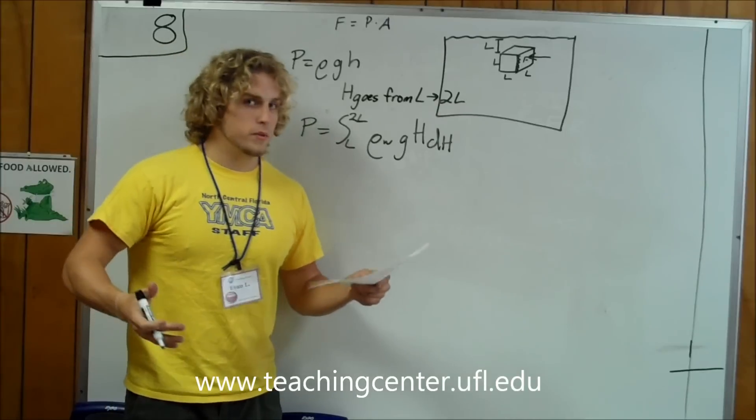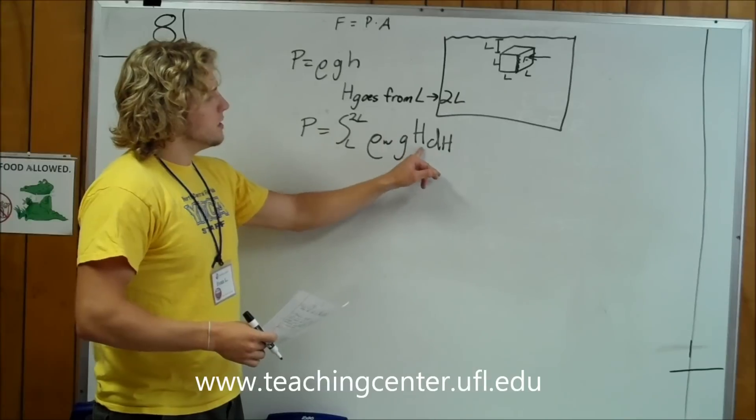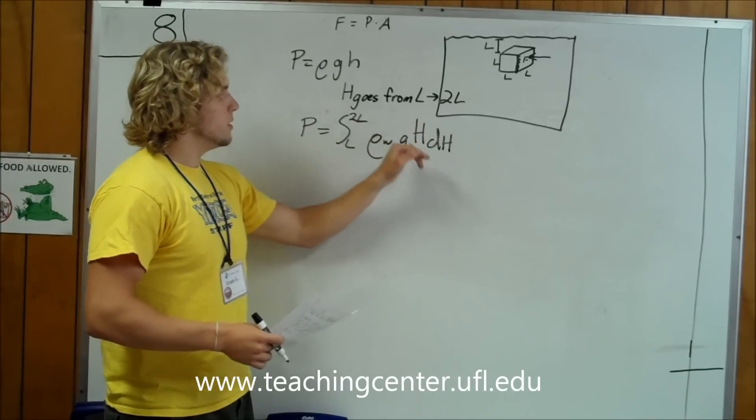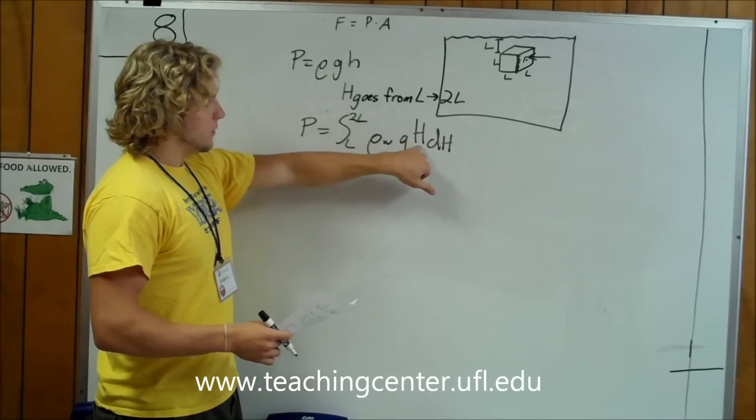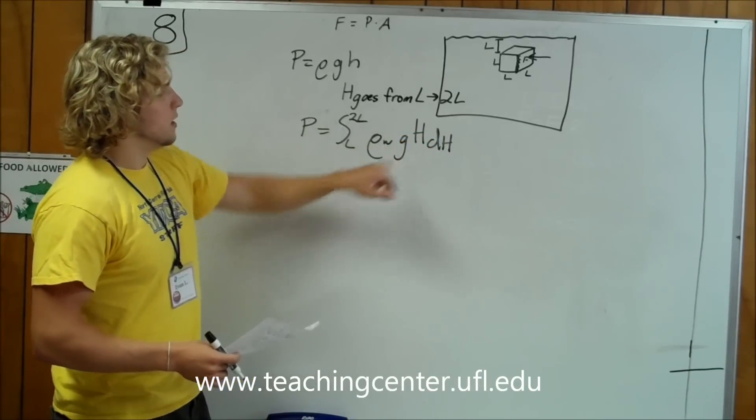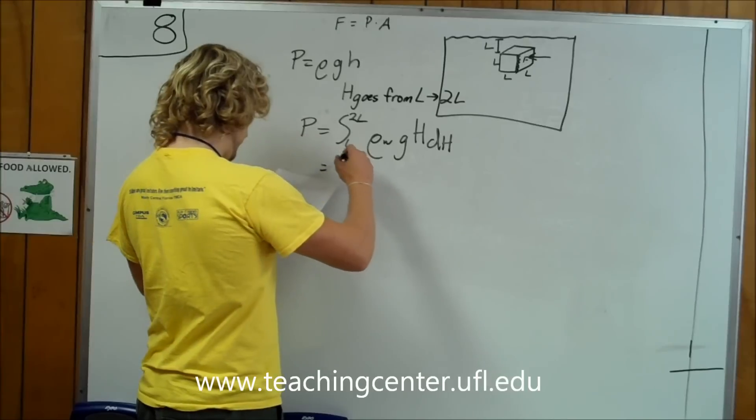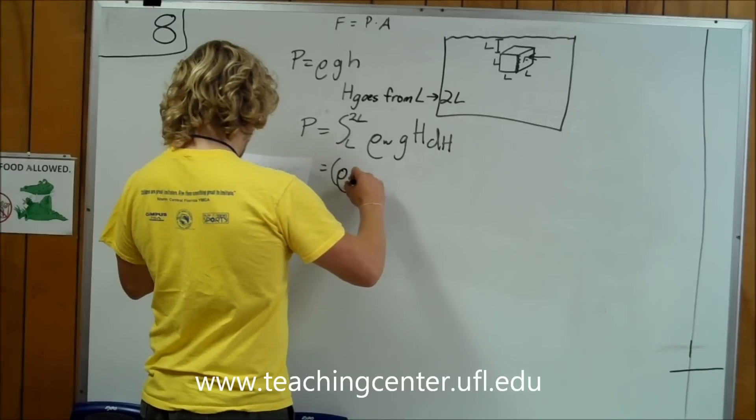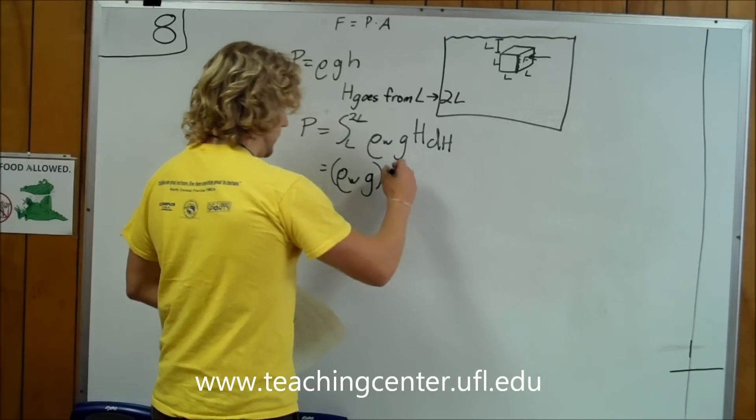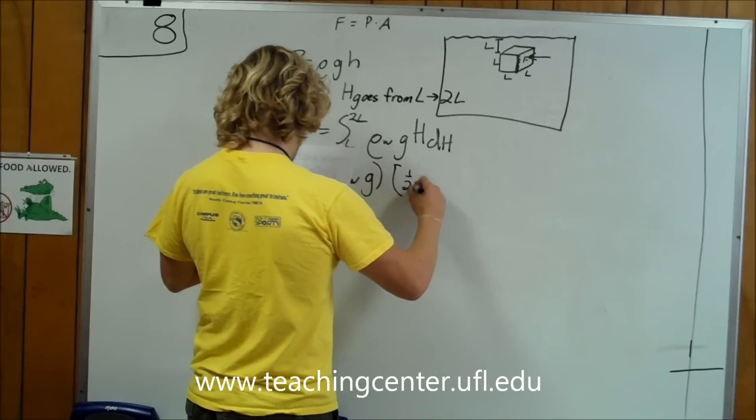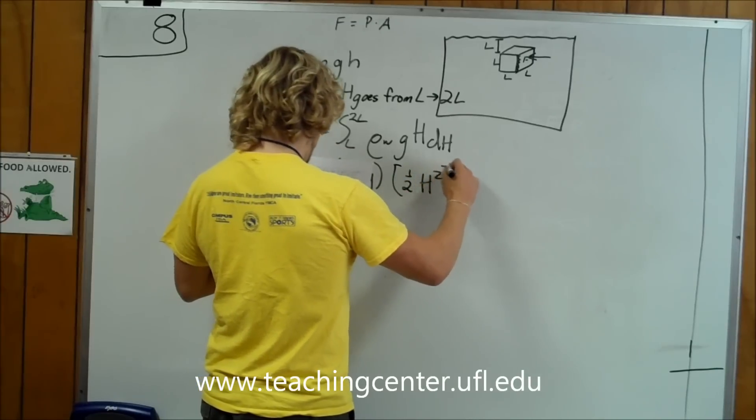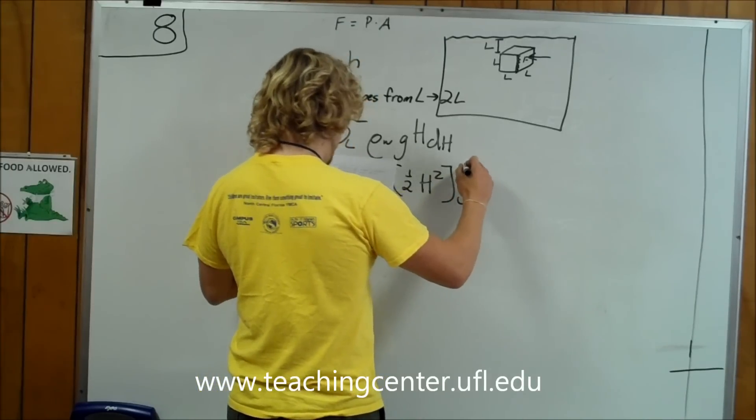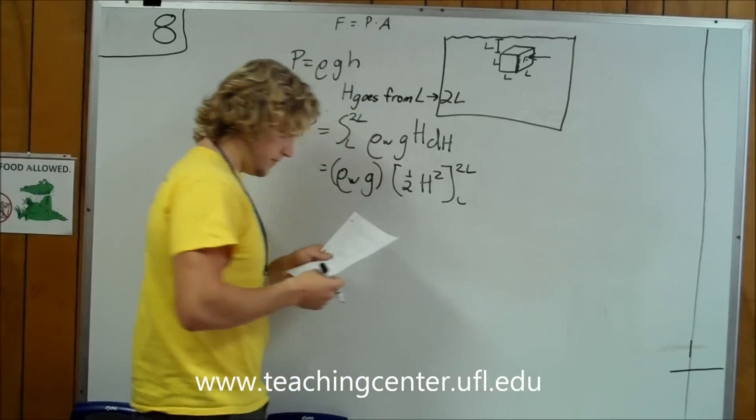How do we solve for this? Because H is the one that's changing, that's why I put the D H here, and that means we know how to take the integral. These two are constants. So it turns into we take out the constants rho G, and then we have one half H squared from L to 2L.